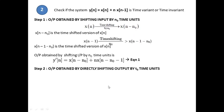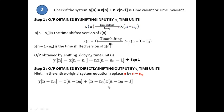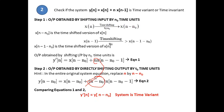Step two — output obtained by directly shifting the output by n₀: replace every n in the entire equation with n − n₀. So y(n − n₀) = x(n − n₀) + (n − n₀)·x(n − n₀ − 1). This is equation two. Comparing equations one and two: in equation one the factor is n, in equation two it is n − n₀. These are not equal.